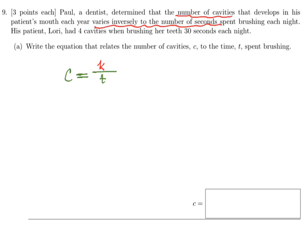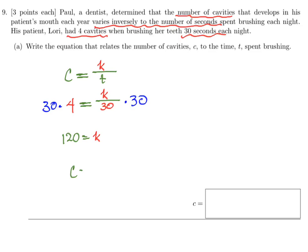K is called the constant of variation. In order to have the right equation, we have to figure out what K is, so we use the information about Lori having four cavities after brushing her teeth 30 seconds each night. We plug those numbers in for C and T: four equals K over 30. Multiply both sides by 30, and we get K is 120. So we can write down our equation as C equals 120 over T.